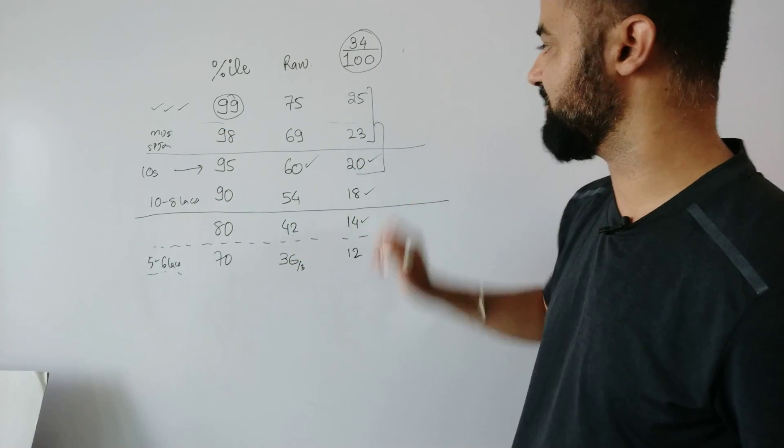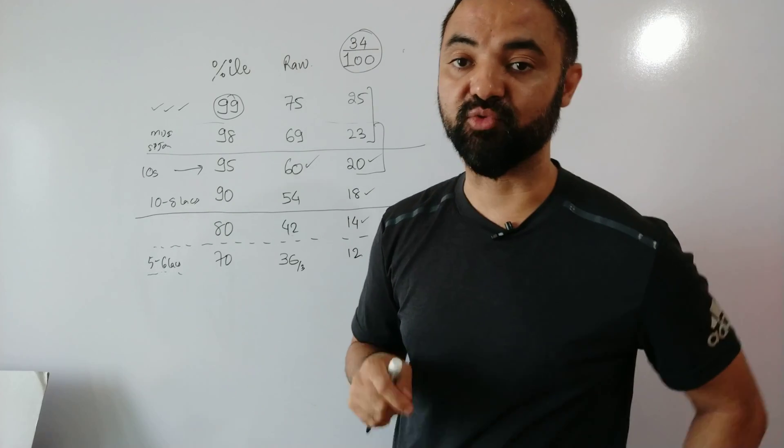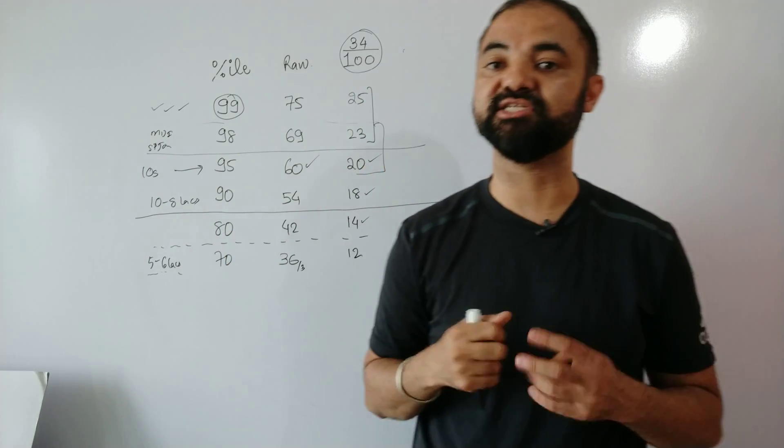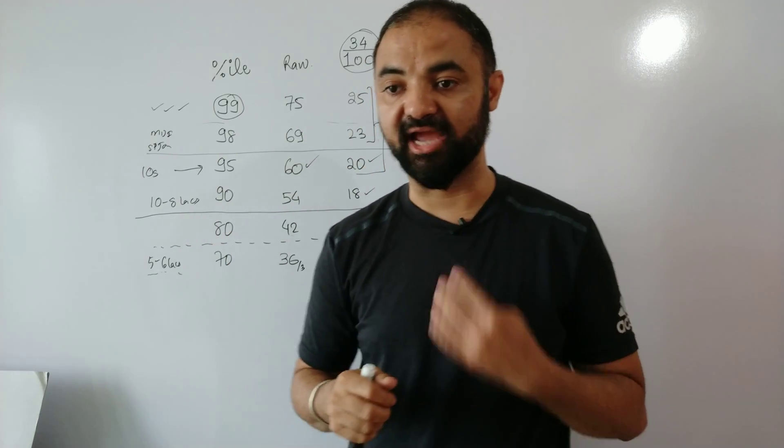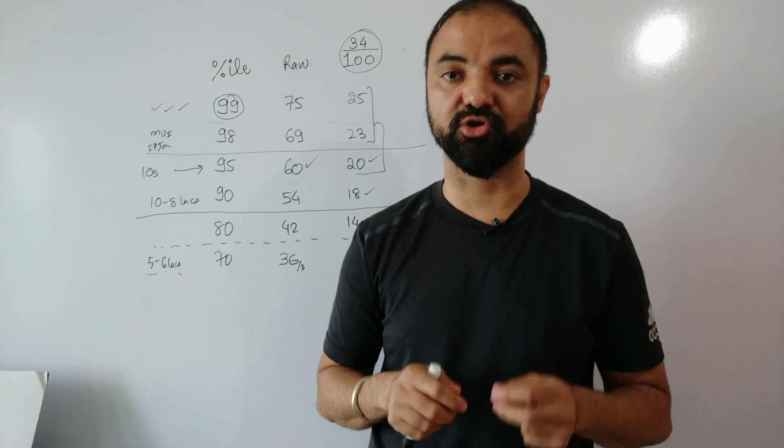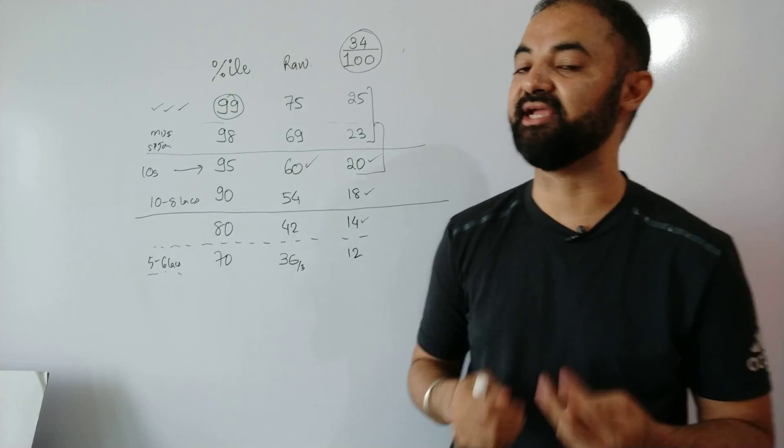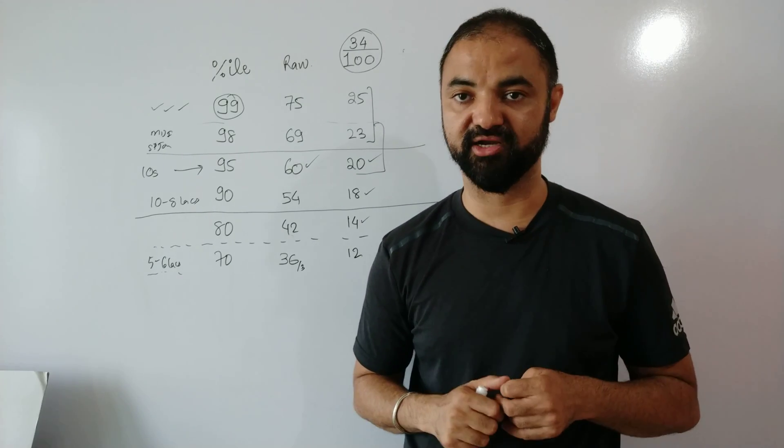And for engineers you have to be 23-25 questions correct. Now the only problem is this is not the exact score, this is a raw score. Raw means CAT people do not give you the exact score, they'll give you raw score so that coaching classes don't find out the exact number of questions required to clear the cutoff.